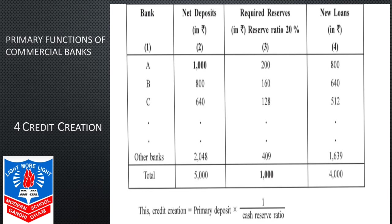The process of credit creation can be better understood with the following numerical example. For simplicity, let us assume the entire commercial banking system is a single unit called 'banks.' Suppose initially the public deposited Rs. 1000 with the banks. Deposits in the form of initial public savings are called primary deposits. The banks kept 20% as cash reserves — that is Rs. 200 — and lend Rs. 800 as loan.